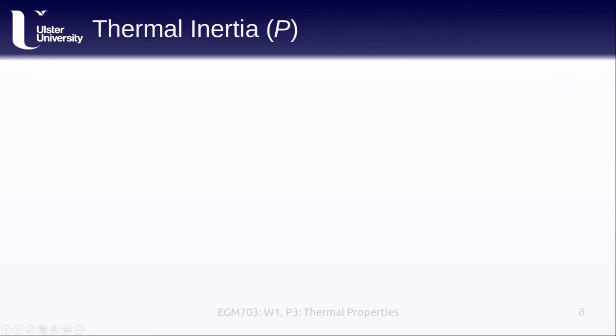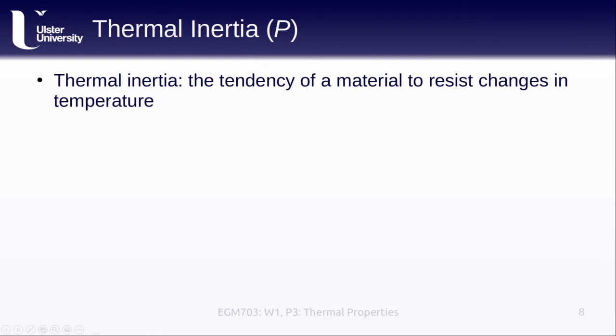Next up, we will discuss thermal inertia, which is normally denoted as a capital P. Like the name might suggest, thermal inertia is the tendency of a material to resist changes in temperature. It's a way of describing how quickly or slowly different materials react to changes in energy. Thermal inertia is calculated as the square root of the thermal conductivity times the heat capacity, times the density of the material. It has units of joules per square meter per kelvin per seconds to the one-half power, which is why I've written this down here.